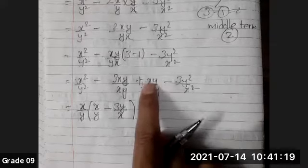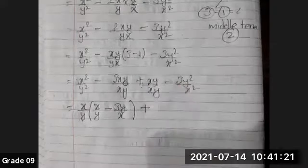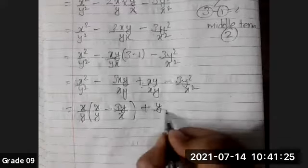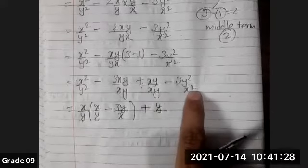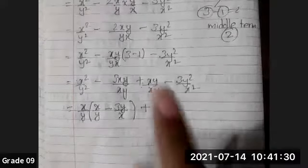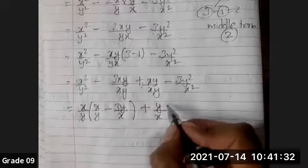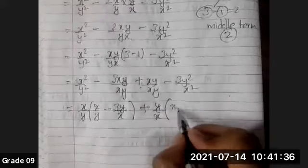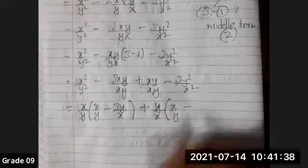You can see x² and x, so x is the only common. See, this same thing will come: x/y minus. As it is, because plus is the common, that's why the sign changes. Again, out of y², y has gone out, so y is left, and there is x.